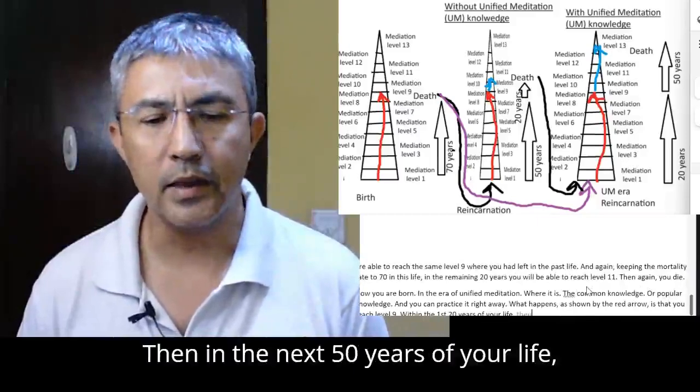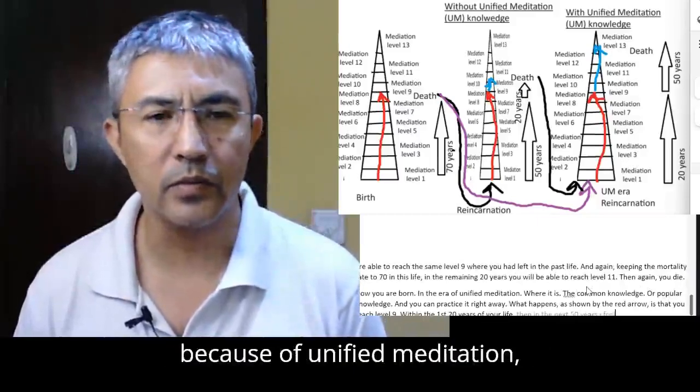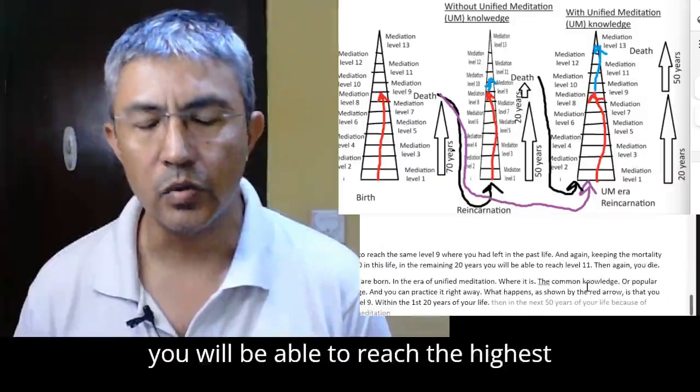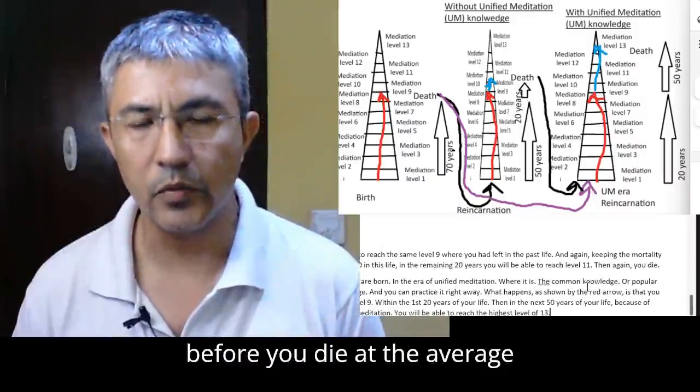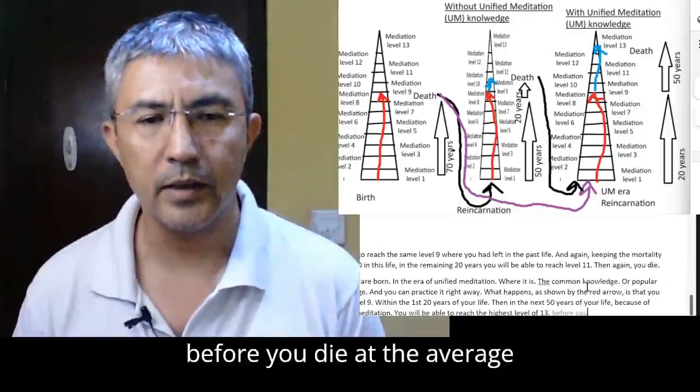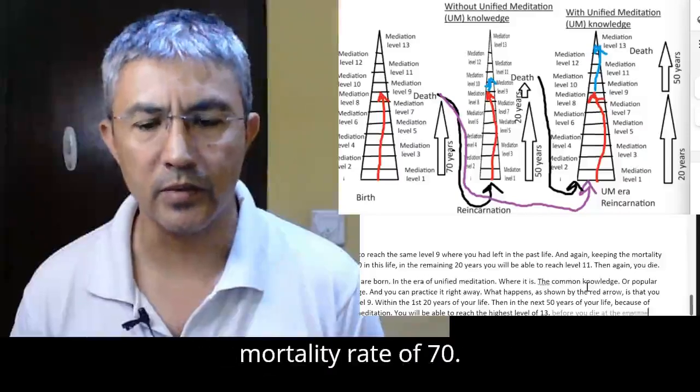Then in the next 50 years of your life, because of unified meditation, you will be able to reach the highest level of 13 before you die at the average mortality rate of 70.